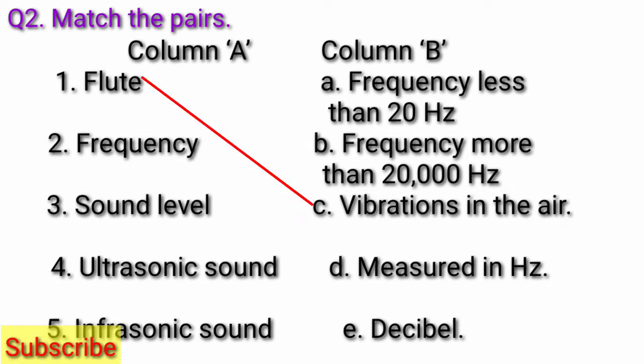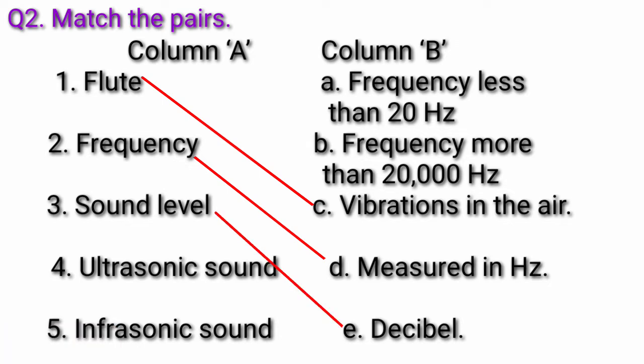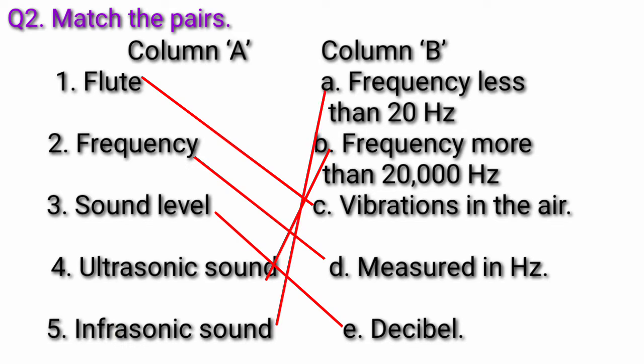Answers: Fluid - vibrations in the air. Frequency - measured in Hertz. Sound level - Decibel. Ultrasonic sound - frequency more than 20,000 Hz. Infrasonic sound - frequency less than 20 Hz.